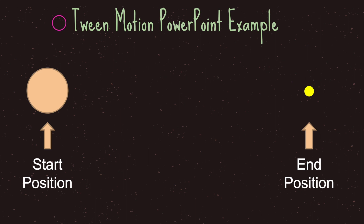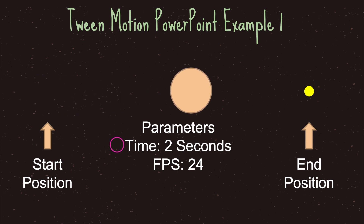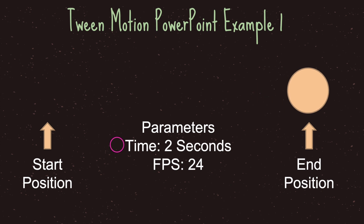Let me show you tween motion through PowerPoint. I tell PowerPoint that my game object's start position is here, and I would like the end position to be here. The arguments are: it should calculate the transition from start to end position in two seconds, shown at twenty-four frames per second. As you can see, it did all the calculations for us — PowerPoint calculated the speed at which the object would move given that I'd like it to end at the end position in two seconds at twenty-four frames per second.